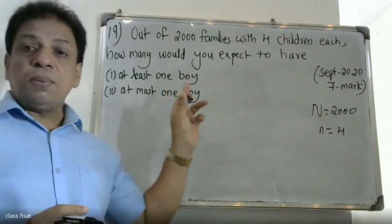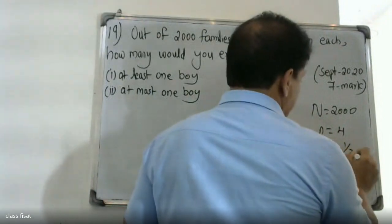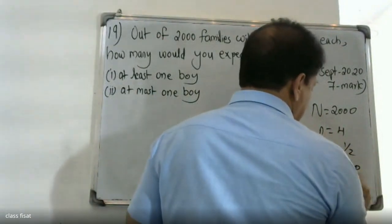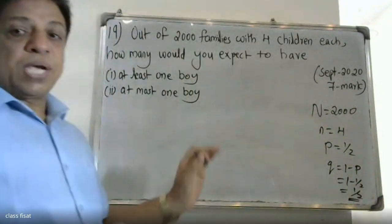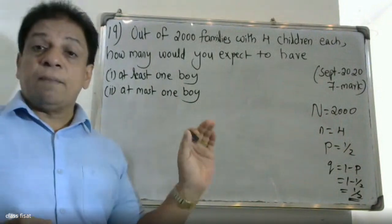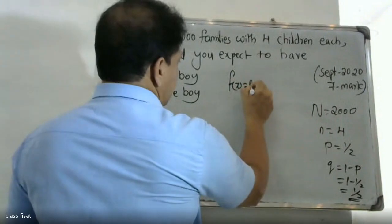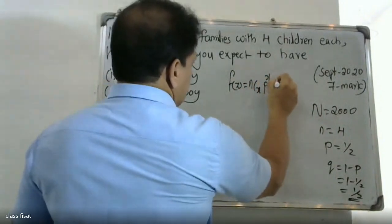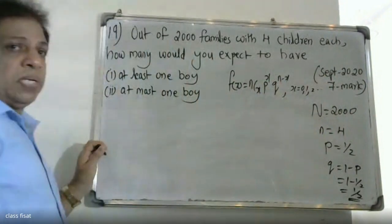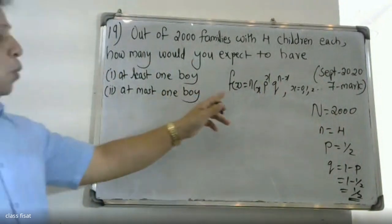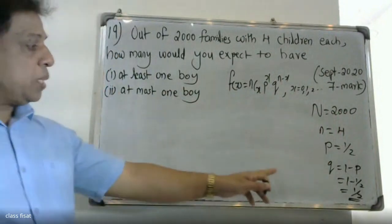The probability of success — a boy — therefore P is equal to 1/2. 1 minus P is equal to 1 minus 1/2, which is equal to 1/2. This follows a binomial distribution. The formula is f(x) = nCx × p^x × q^(n−x), where x = 0, 1, 2... Here n = 4, p = 1/2, and q = 1/2.